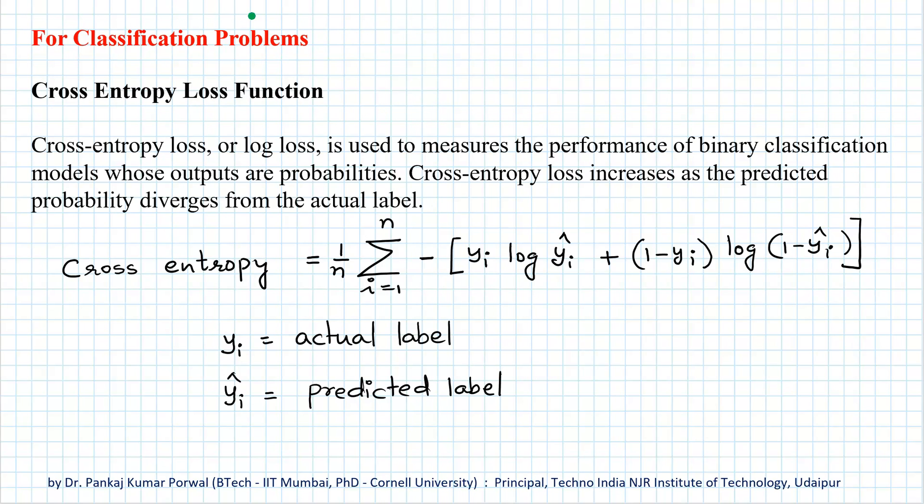Similarly, for classification problems, the outputs are likelihoods or probabilities, and in that case, the cross entropy loss function is most appropriate. The average cross entropy is defined as average of this expression which is called cross entropy. So here yi is the actual label for our input data and ŷi is predicted label.